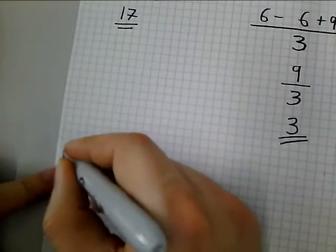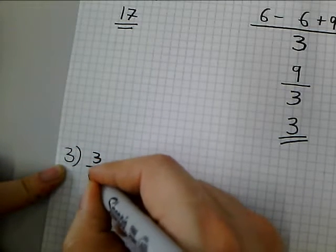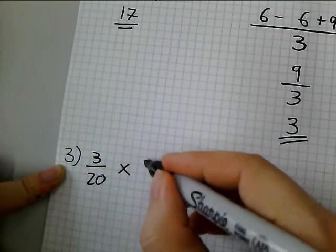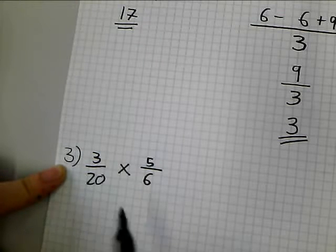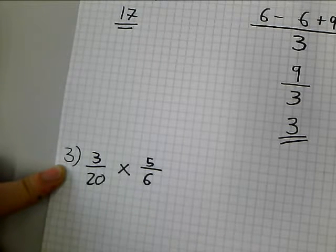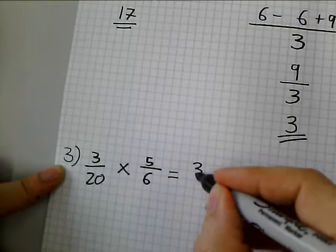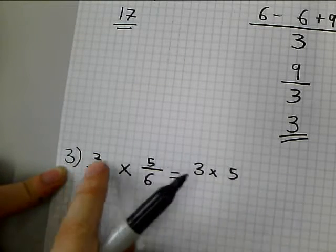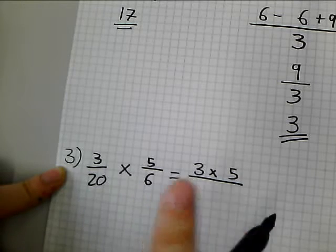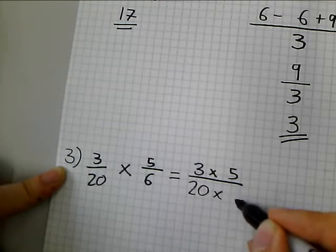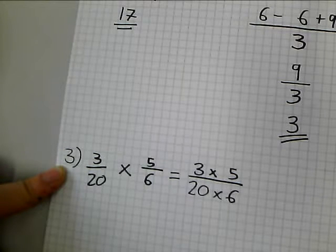I'll then be given a fraction question. 3 twentieths multiplied by 5 sixths. Now you've got a choice here. You can either multiply the tops and the bottoms and then simplify, or we could do this much more efficient method. So I'm going to show that I'm multiplying the tops, 3 times 5 on the top, and then 20 times 6 on the denominator. Now, before I evaluate top and bottom, I'm going to look for common factors. Numbers that go into the top and the bottom.